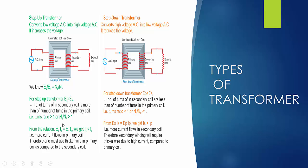From the ideal transformer power relation, for a step-up transformer the secondary voltage is higher, so the secondary current is less than the primary current. For a step-down transformer, the secondary voltage is lower, so more current flows in the secondary — IP is always less than IS for step-down.